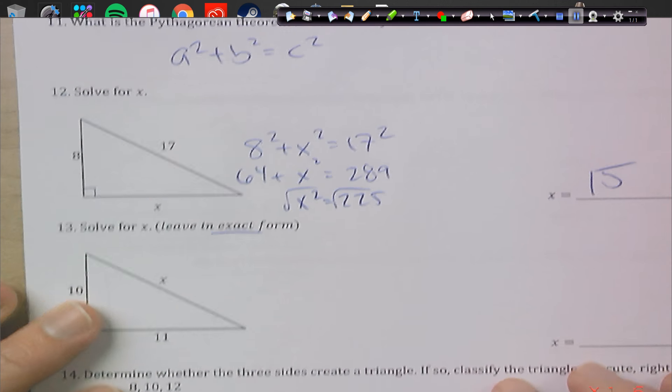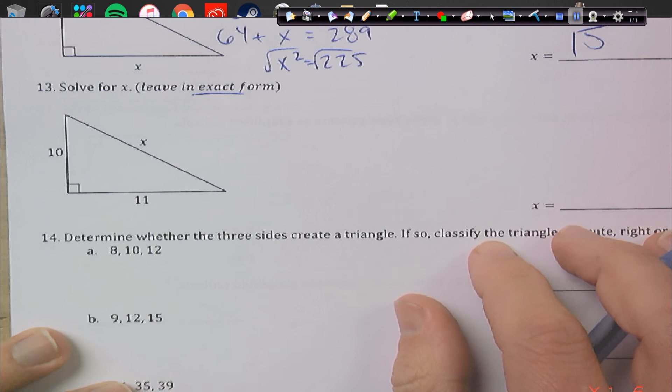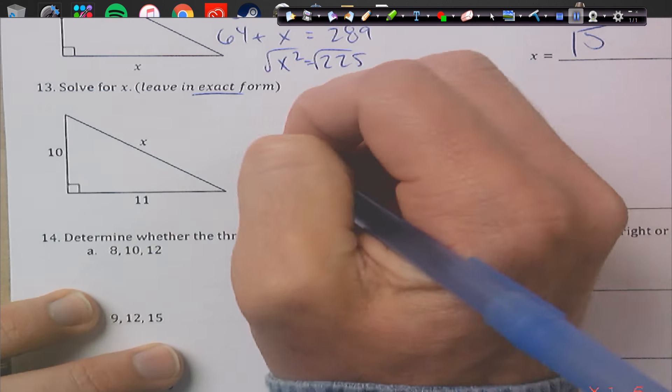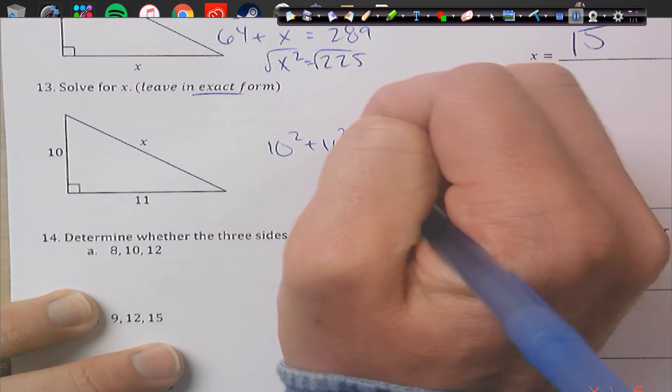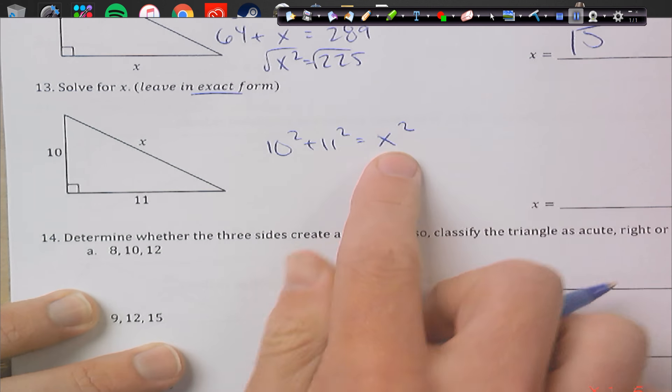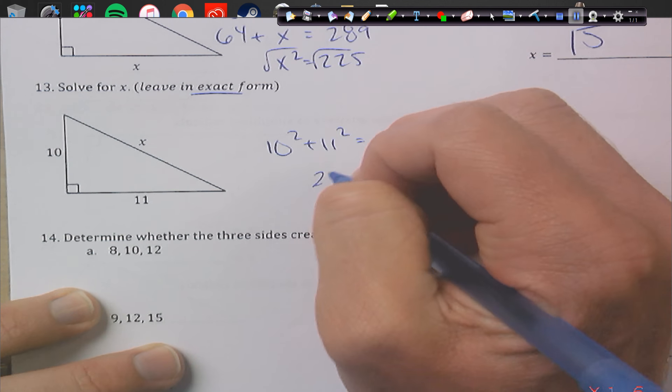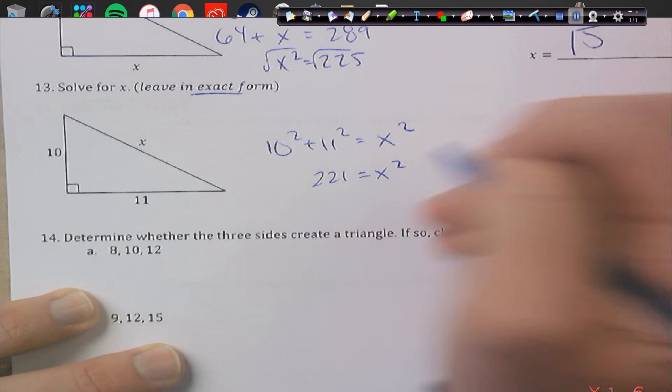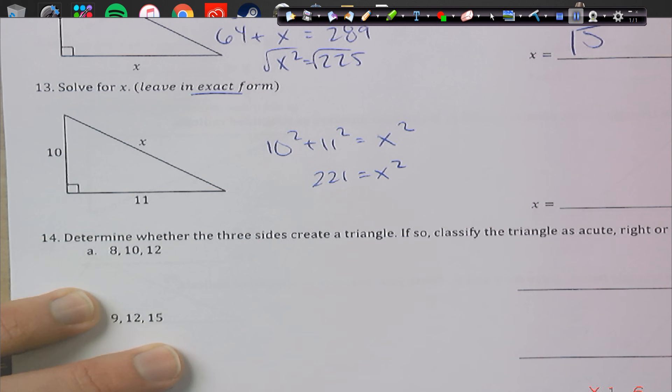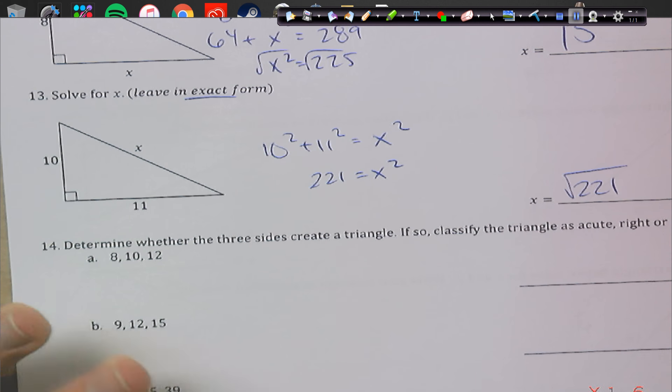Exact form means no decimals, in case you're wondering. So do not use decimals here. This is going to be 10 squared plus 11 squared equals x squared, because x is the hypotenuse in this picture. So 10 squared plus 11 squared is going to be 221 equals x squared. And so take the square root of 221, and we actually just get the square root of 221. You can't simplify that. There's no number that we can break that down to. That will help us out.